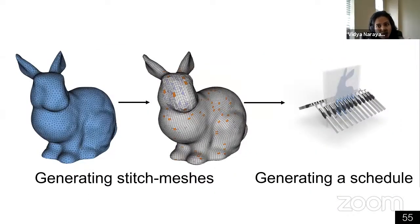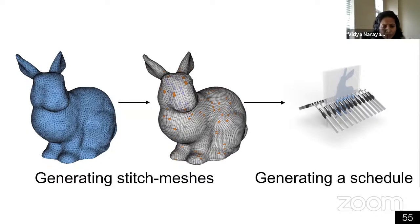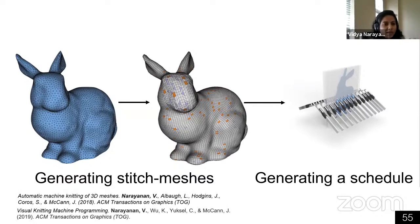I didn't cover a lot of details in this talk — for example, how do you automatically come up with these stitch meshes and how do you generate a schedule that computes fully generated code from these individual code pieces. But as you've seen in the results, we have figured out how to do this especially for the two-bed machine case. We're trying to generalize this to multi-layer setups, and I think it will be really exciting to have a scheduling system that works with these multi-layer knitting machines.